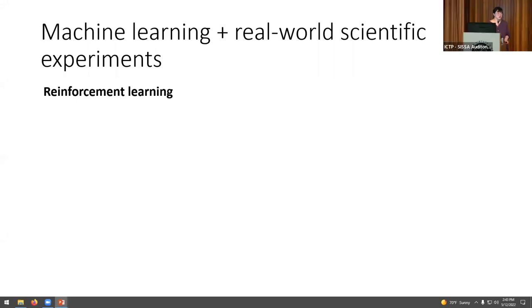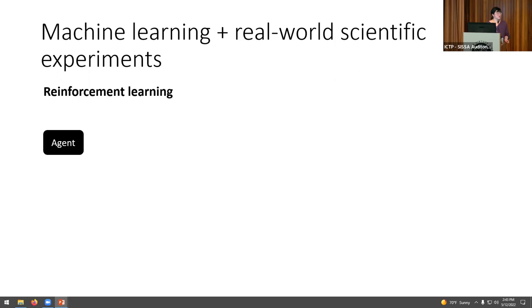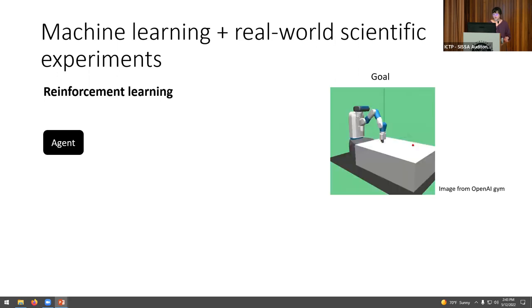So in this project, we also try to explore how machine learning can help us do experiments. In particular, we focus on using deep reinforcement learning technique here. So in reinforcement learning, we usually have an agent. In this case, we will represent it with a deep neural network, and we wanted to achieve a certain goal. For example, it could be that we wanted to control a robot arm to manipulate an object to a target position.